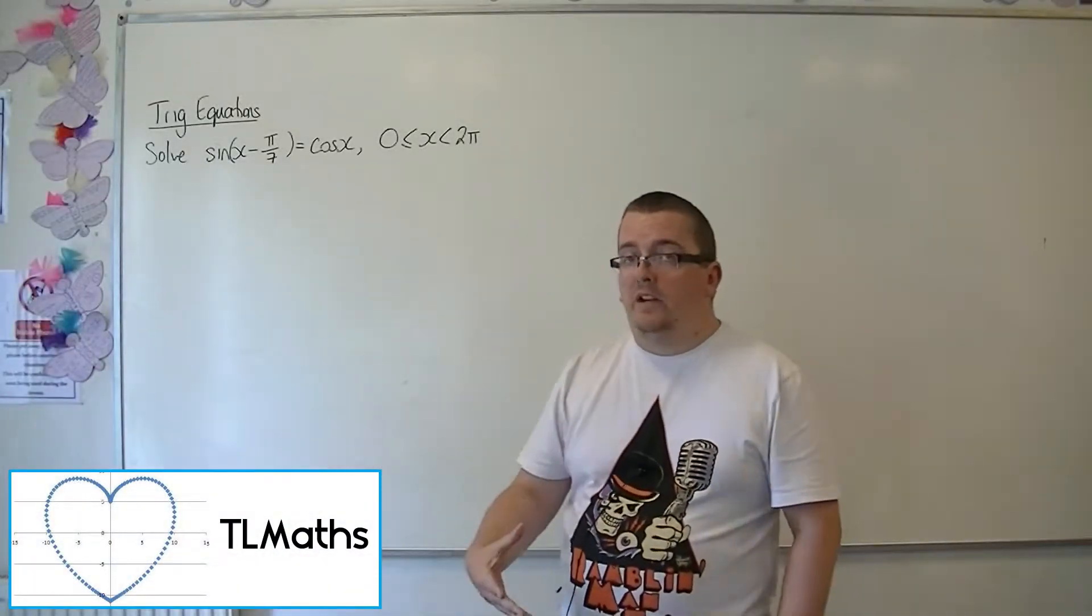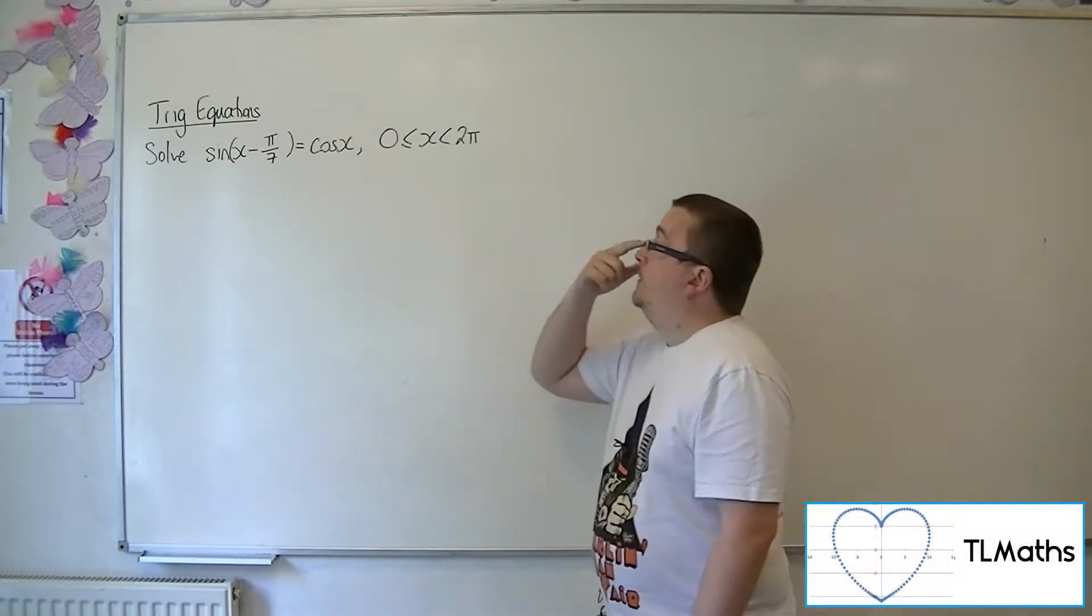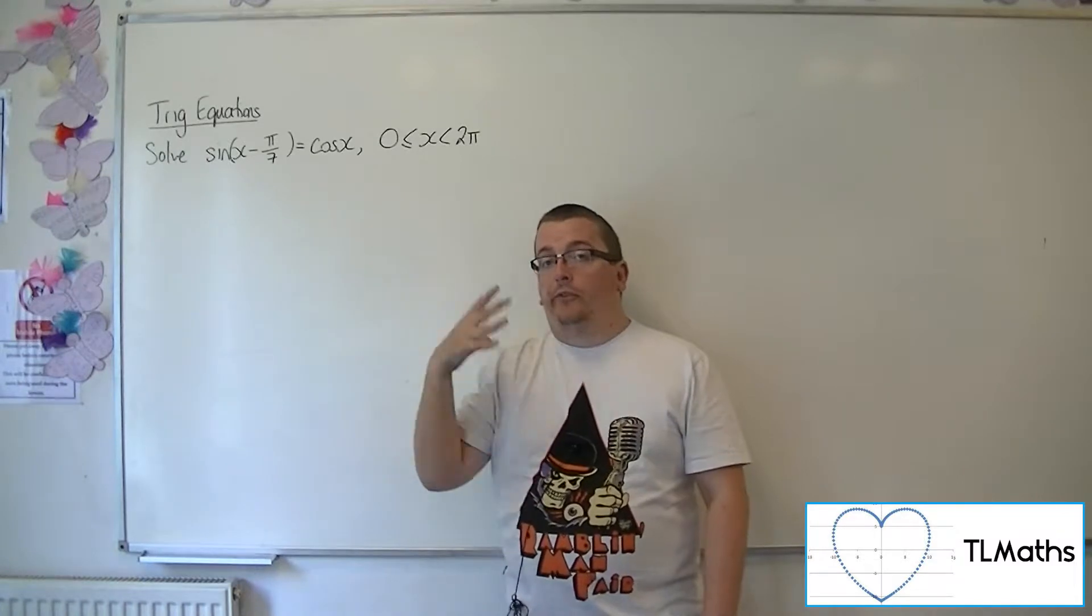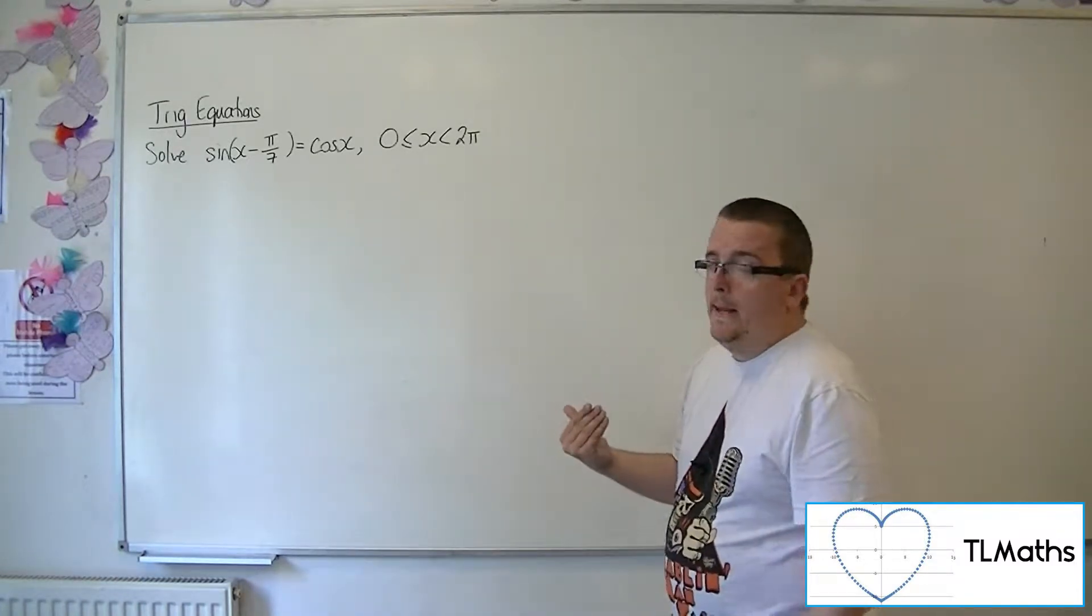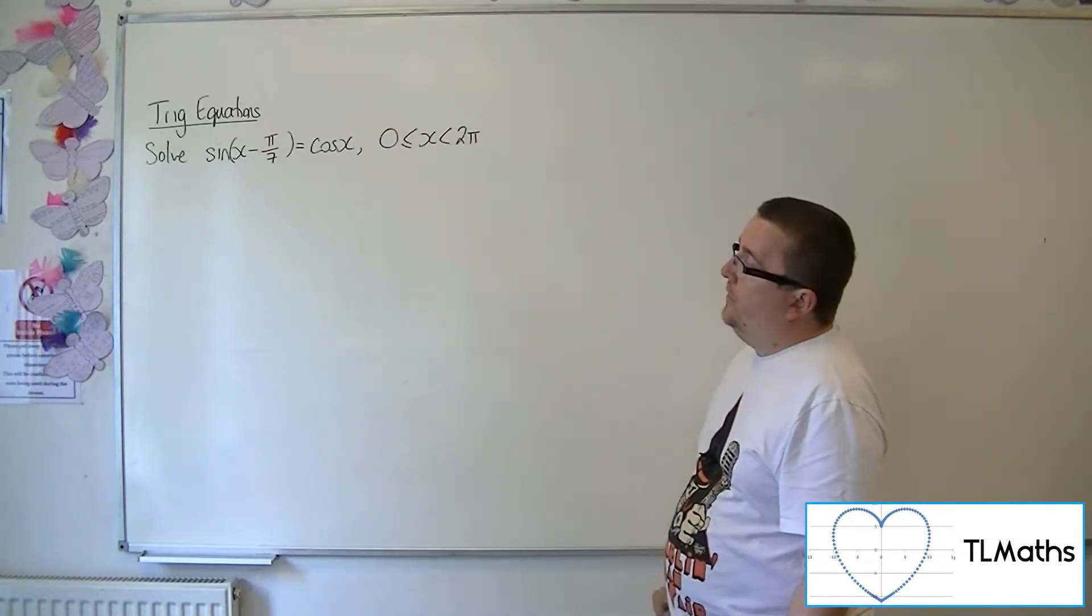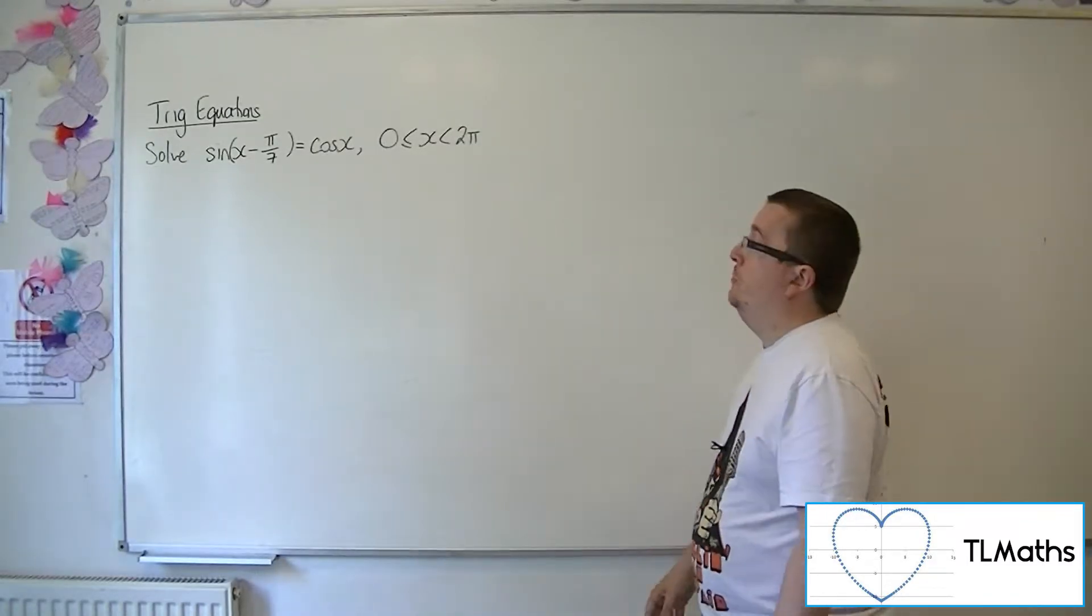If you've watched the previous video, which was a similar problem to this in degrees, we realized that trying to write cosine in terms of sine caused us a problem. And we would hit the same problem with this question here: sine of x minus pi over 7 equals cosine of x, solving between 0 and 2 pi radians.